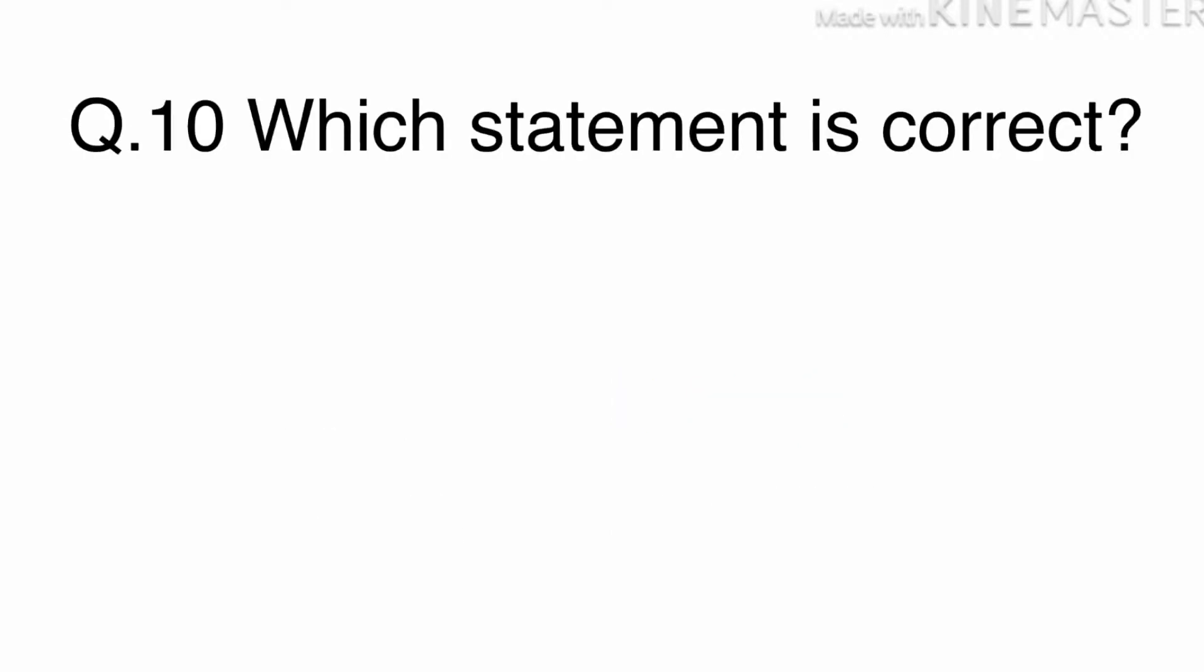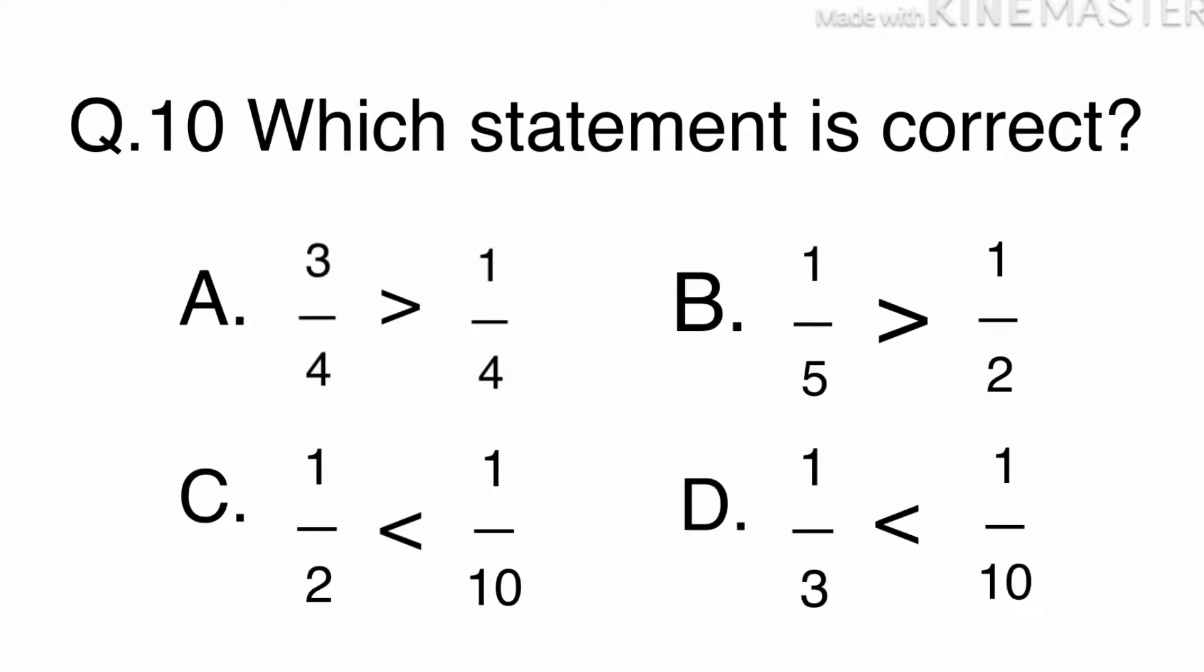Question 10. Which statement is correct? A. 3 quarters is greater than 1 quarter, B. 1 fifth is greater than a half, C. 1 half is less than 1 tenth, Or D. 1 third is less than 1 tenth.